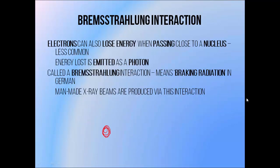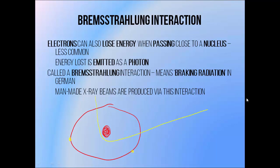Much more rarely, the electron is not able to escape from its temporary orbit without losing any energy. Sometimes its interaction with the charge on the nucleus causes it to slow down slightly and lose kinetic energy. And remember that energy must always be conserved, so it always has to go somewhere. Like electrons always seem to do, it loses its energy in the form of a photon. This is known as a Bremsstrahlung interaction. It is a German word derived from their word for braking — as in slowing down — which is Bremsen, and their word for radiation, which is Strahlung. So it literally means braking radiation: radiation released in the process of slowing down.